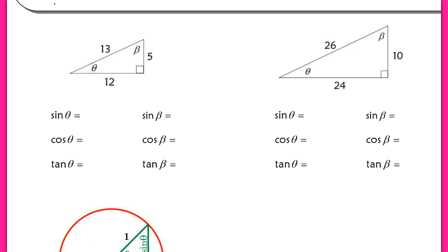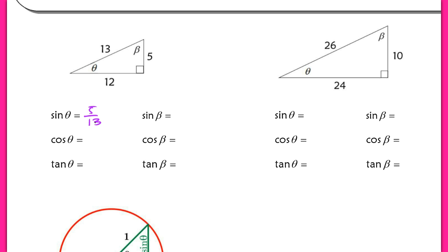Here we have a picture of two similar right triangles. I have a 5-12-13 triple and a 10-24-26 triple, so both of these right triangles are similar to one another. If I look at the left triangle, the sine of theta from theta's viewpoint here would be the opposite 5 over our hypotenuse 13, using the right triangle trig definitions from above. The cosine of theta would be the adjacent 12 over 13. And the tangent of theta would be the opposite 5 over my adjacent 12.